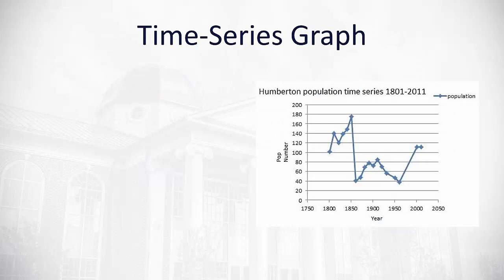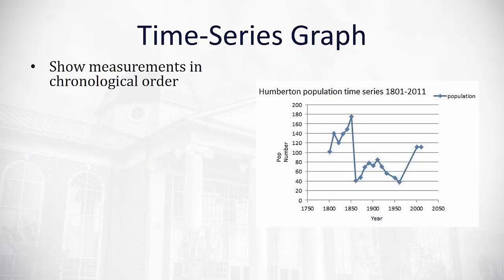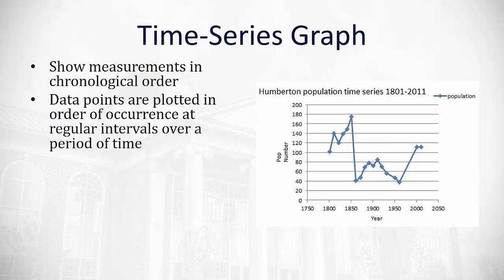A third type of graph that we could consider is what's called a time series graph. A time series graph shows measurements in chronological order, and the data points are plotted in order of occurrence at regular intervals over a period of time.